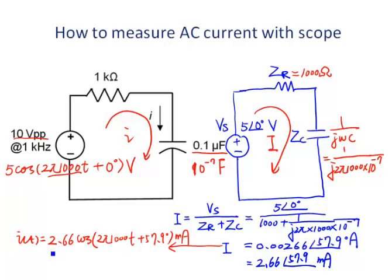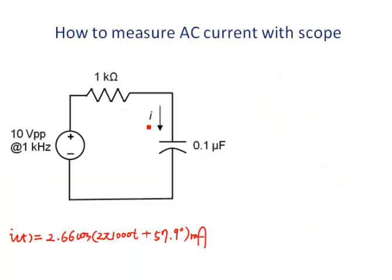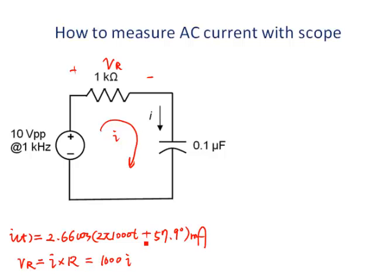Here we try to measure the current, which means we need to measure the magnitude and phase angle separately. We know an oscilloscope can be used to measure voltages but not current directly. One way to measure the current is to measure the voltage across the resistor first. Based on Ohm's law, the voltage across the resistance equals the current times the resistance. The resistance is 1,000 ohms, so the current should be Vr divided by 1,000.